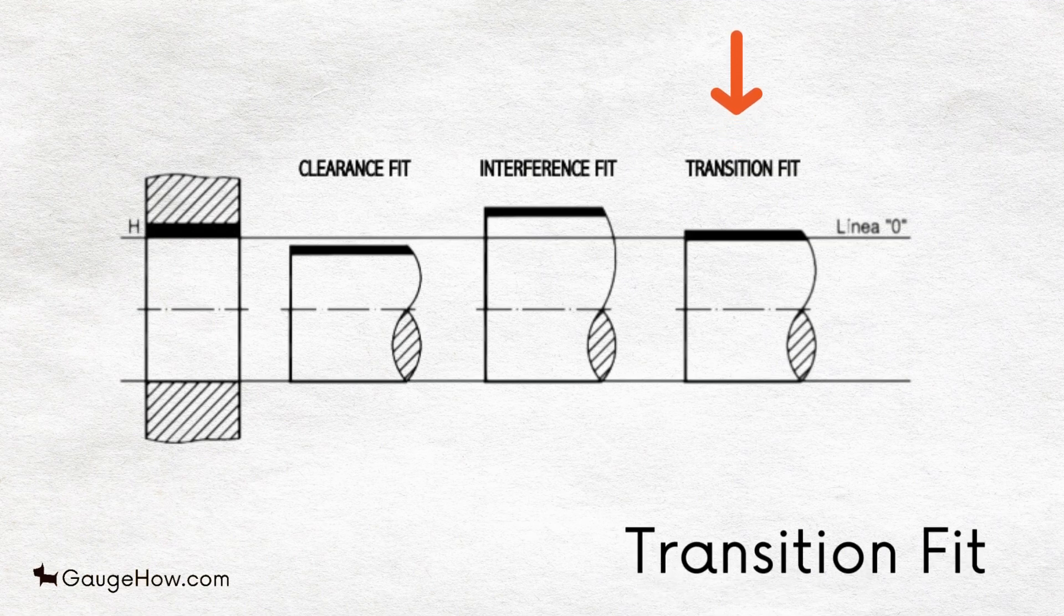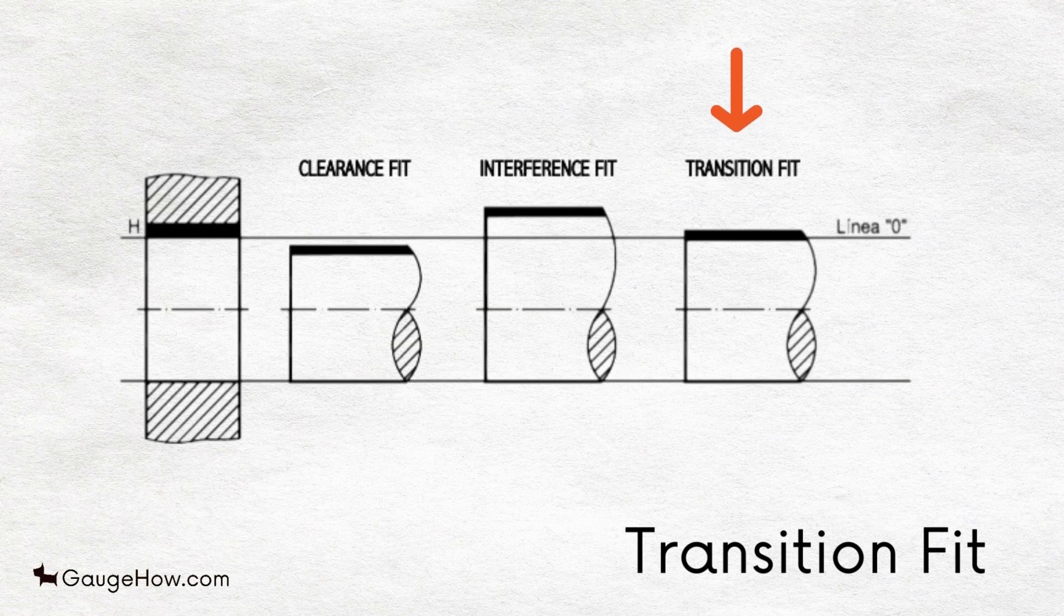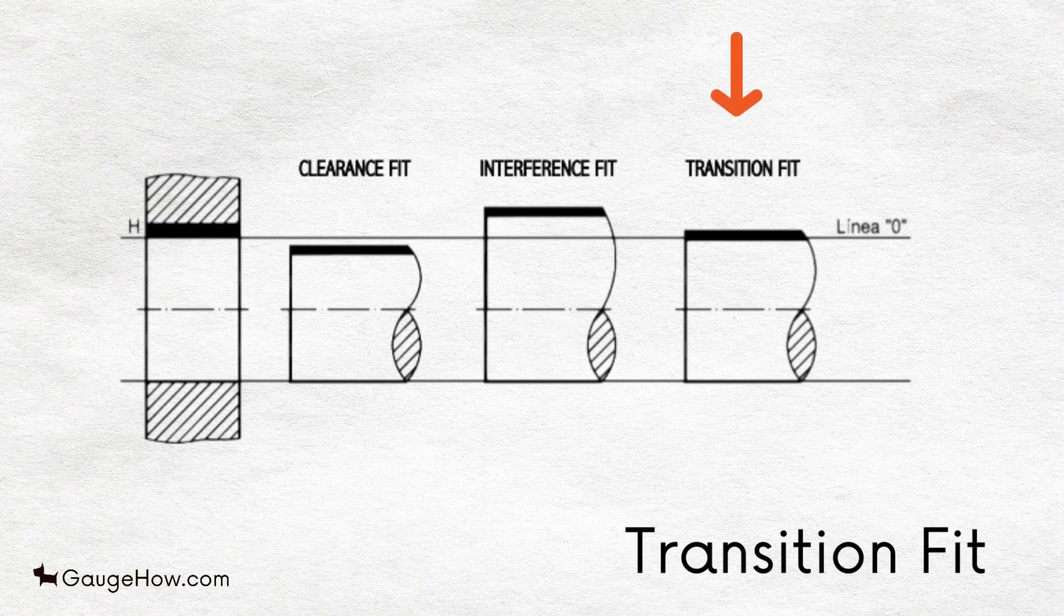Transition Fit: This fit has limits of size so precise that the assembly of the mating parts can result in either a clearance fit or an interference fit.